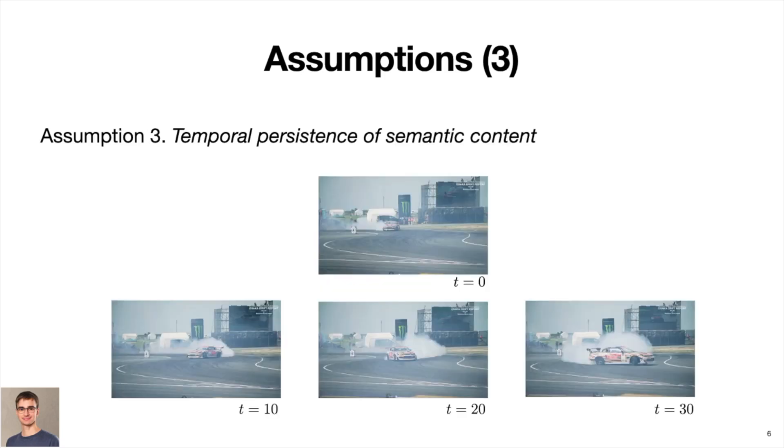The third assumption is the temporal persistence of semantic content. This means that the semantic content of the video clips remains unchanged, at least within a short time span. Taking an example of the racing car again, although the orientation and position of the car with respect to the camera changes with time semantically, these frames are not dissimilar. There is still the road and the racing car.